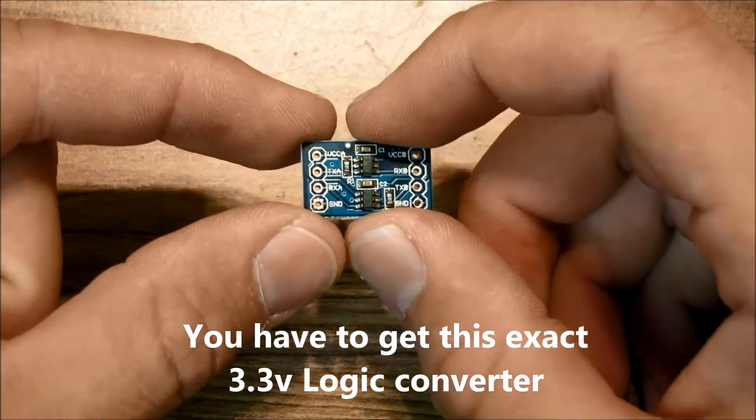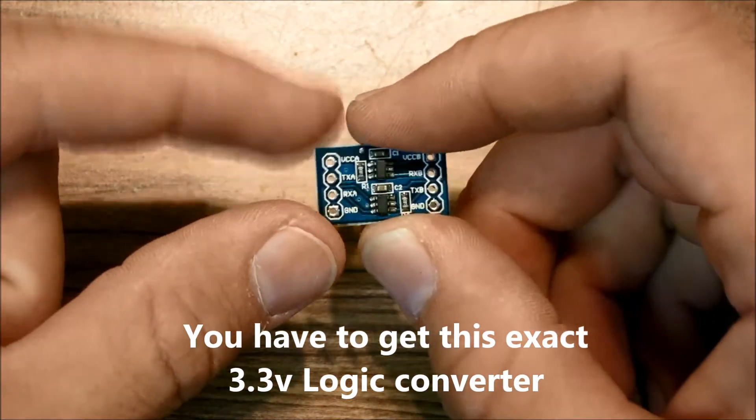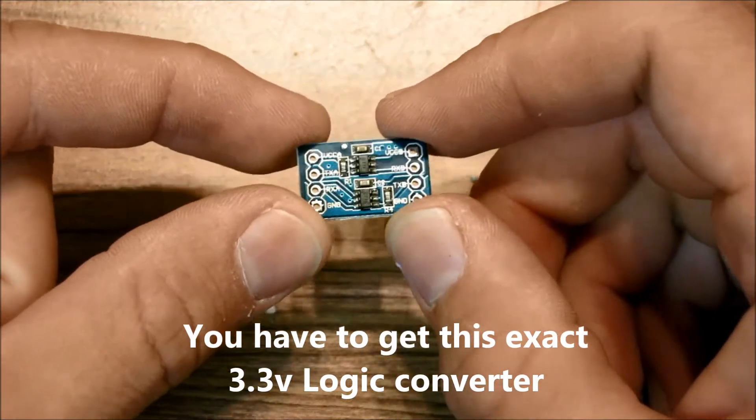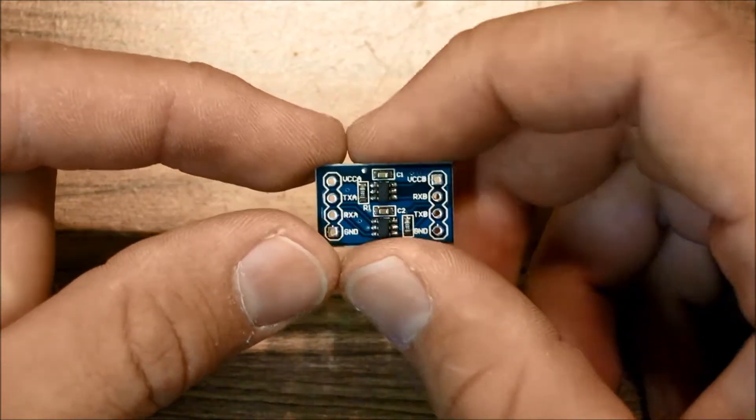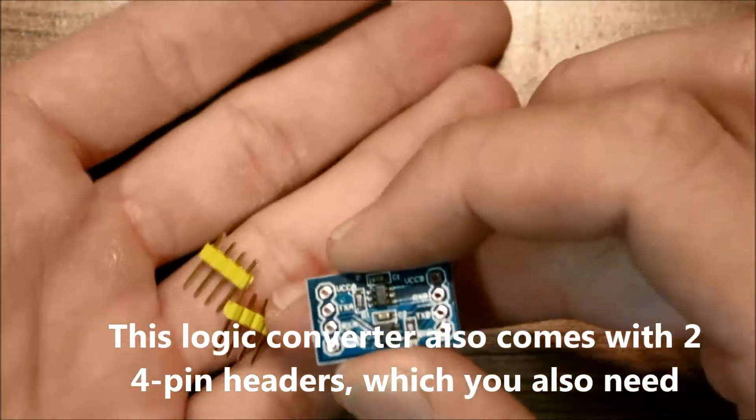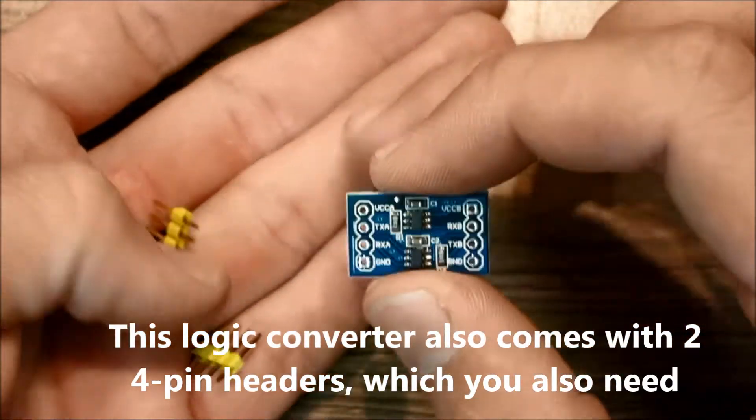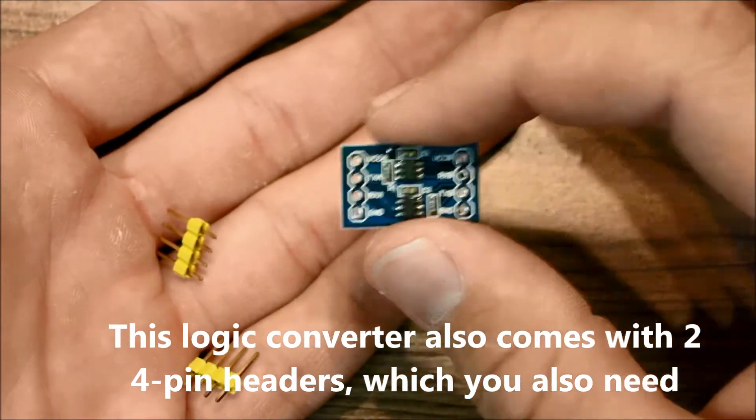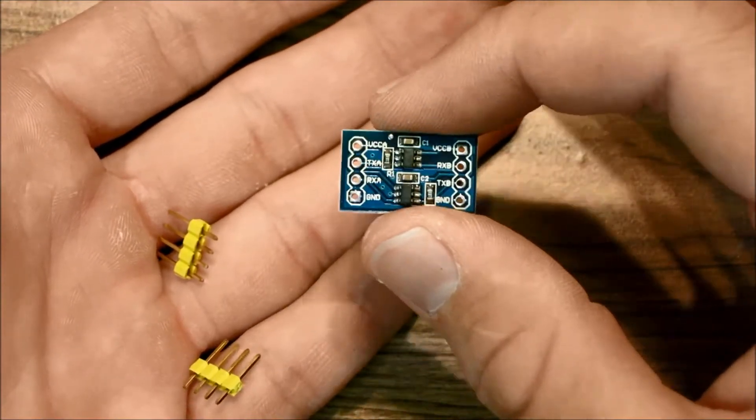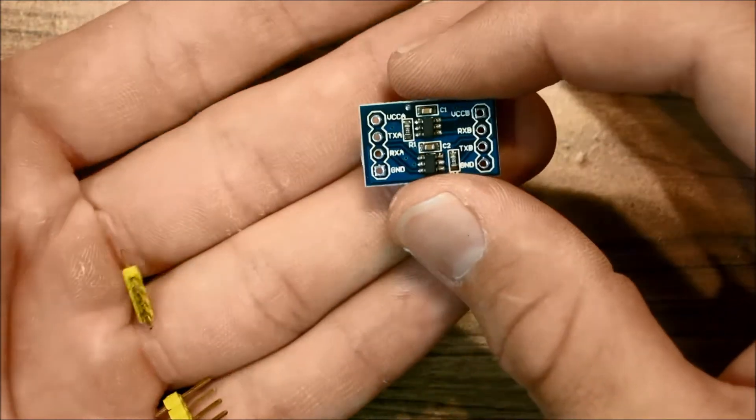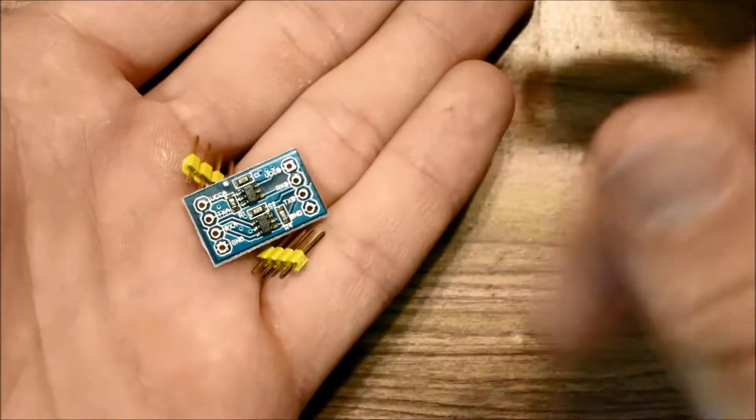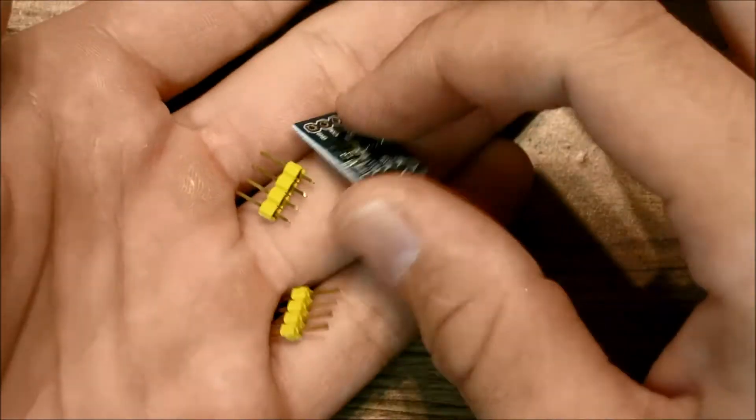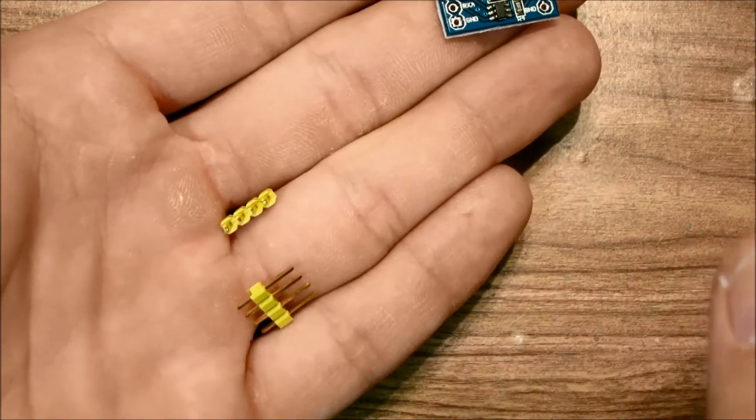You need to get this exact 3.3 volt logic converter or else you can't really use the Bluetooth functionality. Also you need 2, 4 pin headers and these come with the 3.3 volt logic converter, last time I checked, so this all comes as one package. So again, you need a 3.3 volt logic converter and you need 2, 4 pin headers.